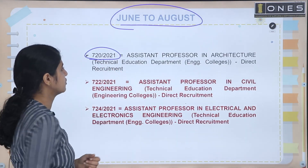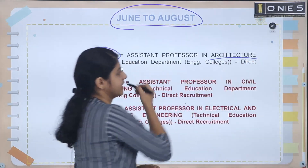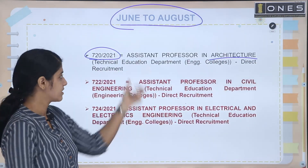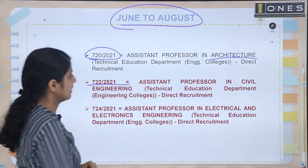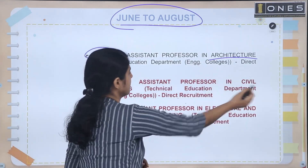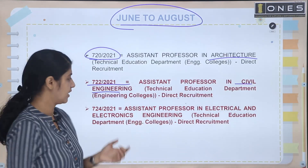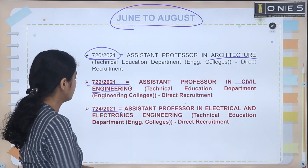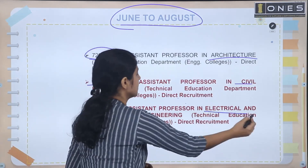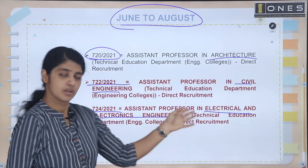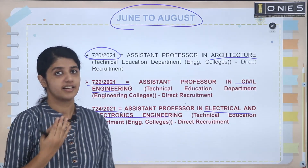720/2021 — that is the assistant professor in Architecture. There is an assistant professor in this slot. 722/2021 — the assistant professor in Civil Engineering, also in this slot. 724/2021 — the assistant professor in Electrical and Electronics Engineering at the Technical Education Engineering College.